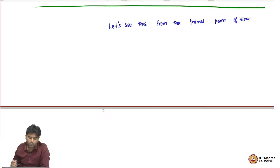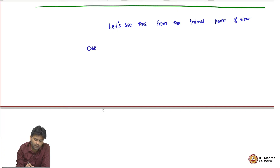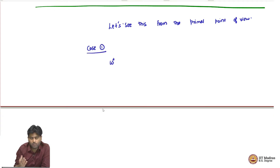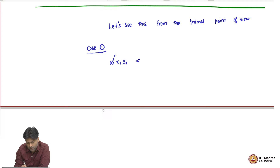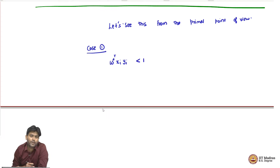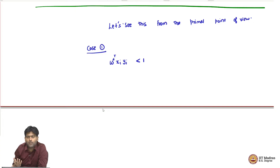What do I mean by primal point of view? Let us say I solve the primal problem and then I observe — again there are three different cases. I observed that for the point I solved primal, I got a W star, and I observed that W star transpose x_i y_i is strictly less than 1, which means that the point is strictly classified with margin less than 1, or which also implies that this could be a point which is misclassified.